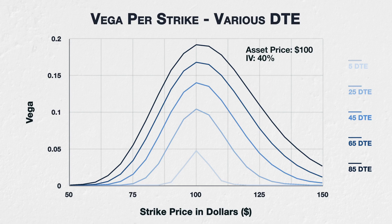The effect of time on vega is quite clear to see here. Starting with the most time to expiry of 85 days at the top, for every strike the vega is higher than that of the next highest days to expiry of 65. Similarly, the 65 days to expiry line is higher at every strike than the 45 days to expiry line. This trend continues all the way down until we get to the last line, which is 5 days to expiry.